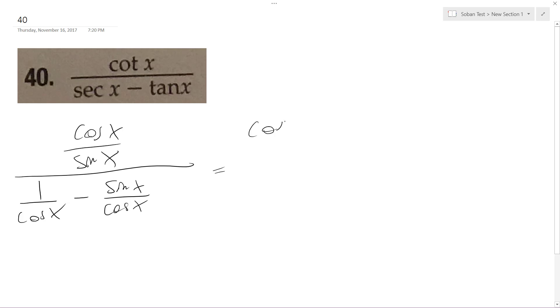So furthermore, cosine x over sine x, and this can be, this is over 1 minus sine x over cosine x. Alright, so this becomes cosine x sine x times cosine x over 1 minus sine x.